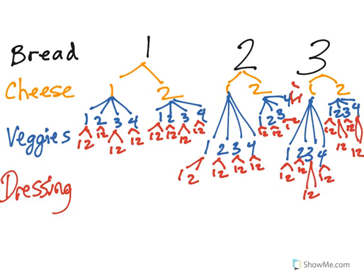So I've already pre-created this: bread on the top, then cheese, veggies, and then dressing. And I obviously didn't space it very well, but you can see how crazy this is.